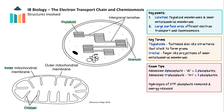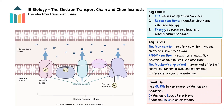Now that we have looked at where the electron transport chain and chemiosmosis occur, let's look at the first process: the electron transport chain. In eukaryotic cells, the electron transport chain is a series of redox reactions that occur in the inner mitochondrial membrane and the thylakoid membrane of chloroplasts. These reactions involve the transfer of electrons down a chain of protein complexes embedded in the membrane, linked by mobile electron carriers. The purpose is to transfer energy stored in high-energy electrons to chemical energy stored in ATP.